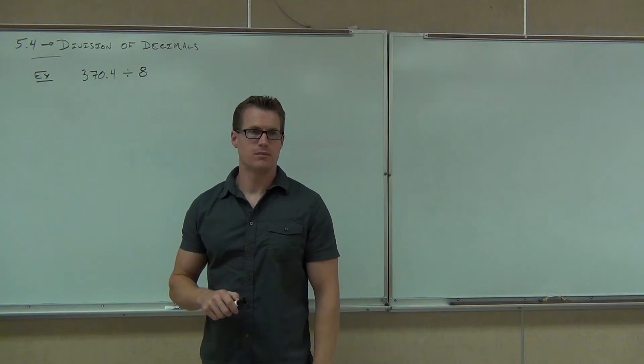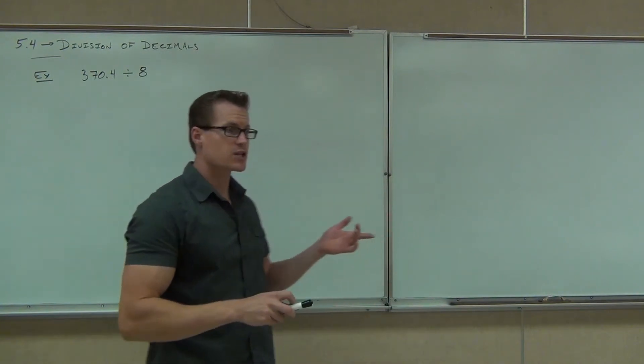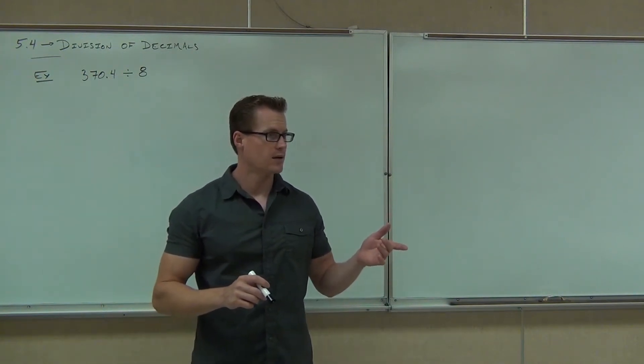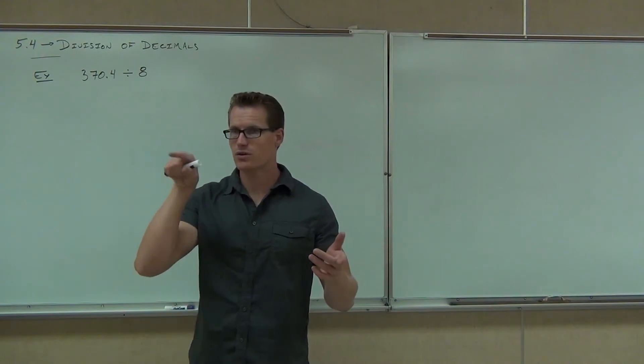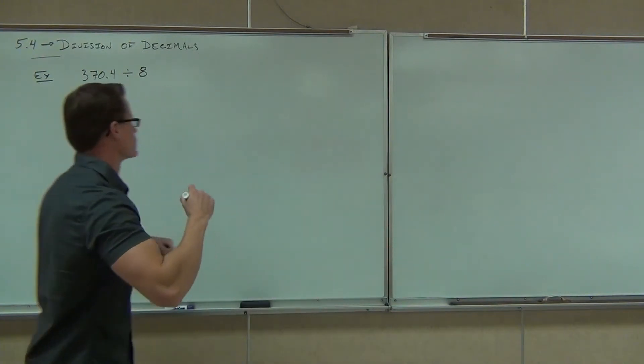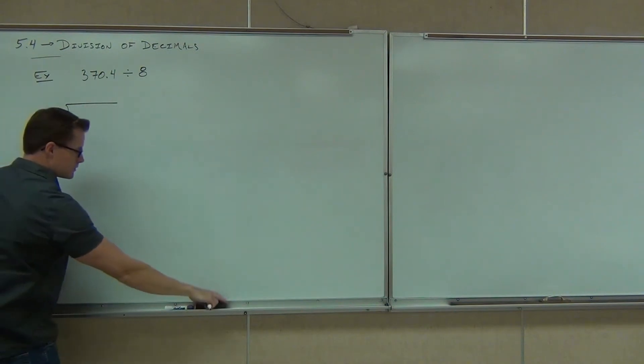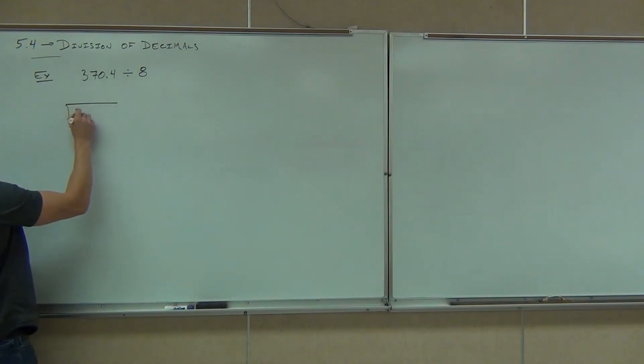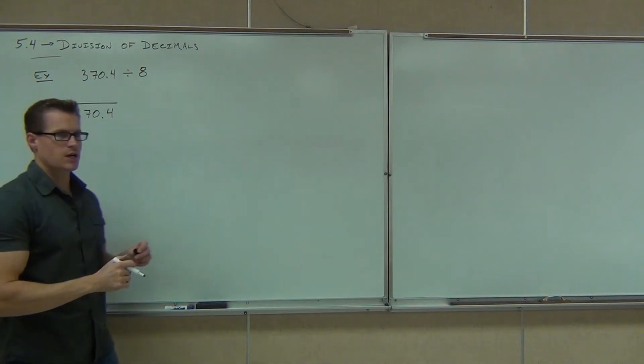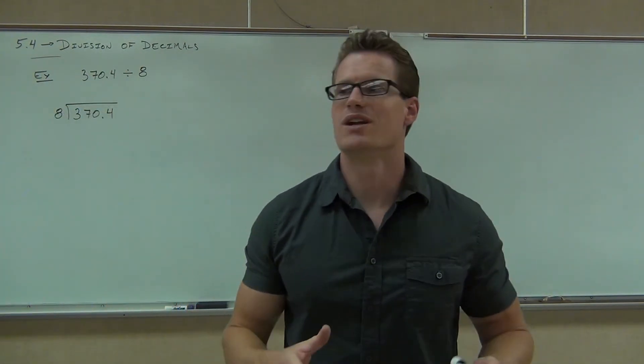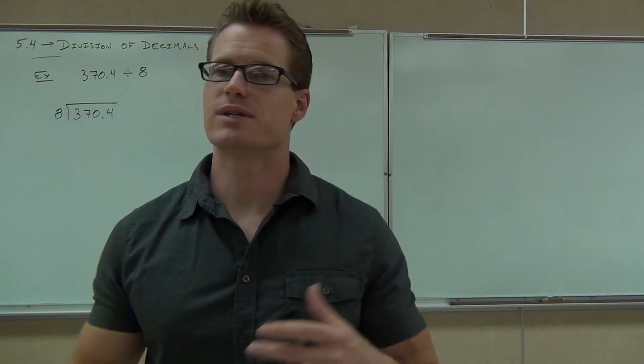How would you set it up? 8 outside of what? 370. And you'd have that little box thing, yeah, the division circle. Well, we're going to set that up the same exact way. So we're going to have 370.4 inside, 8 on the outside.